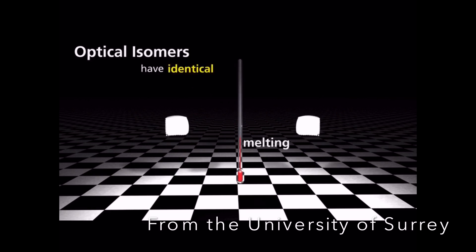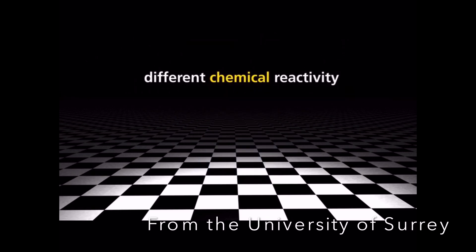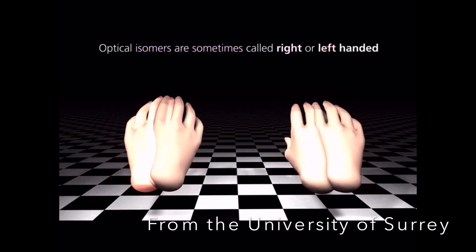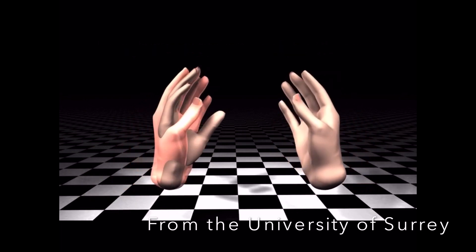These isomers have identical melting and boiling temperatures, densities and solubilities. However, they differ in their chemical reactivity. Optical isomers are sometimes called right or left-handed, because hands are also mirror images, which cannot be superimposed.